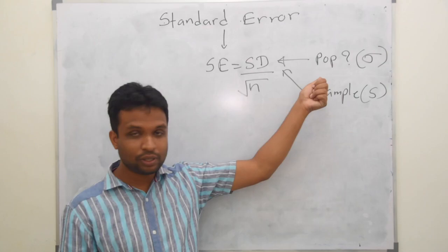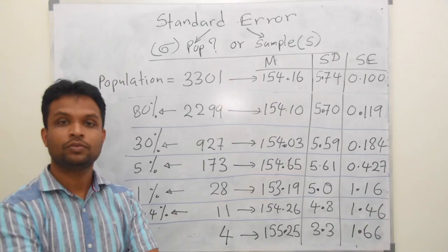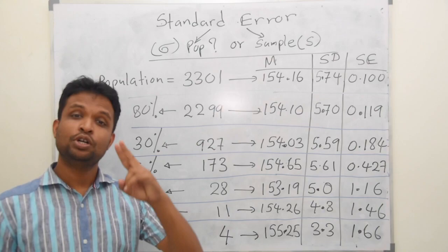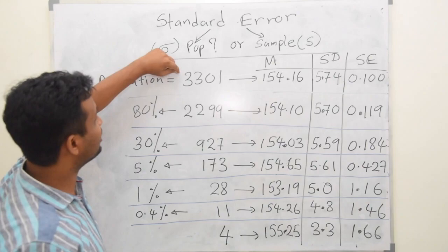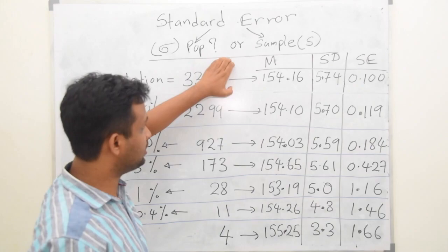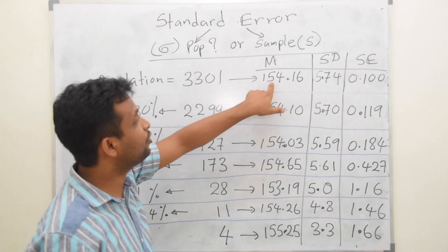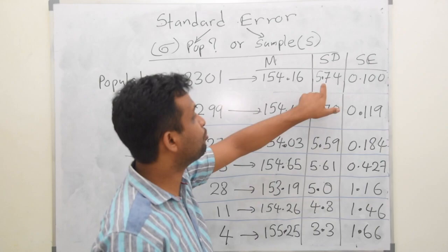Let's consider whether it is population or sample standard deviation using this example. Look at this data set — I am going to do two lectures with it. This is the total population: true data from 3301 pregnant mothers. We measured their height. The average height is 154.16, which is the population mean, mu — a constant. The standard deviation is 5.74, which is sigma — also a constant.